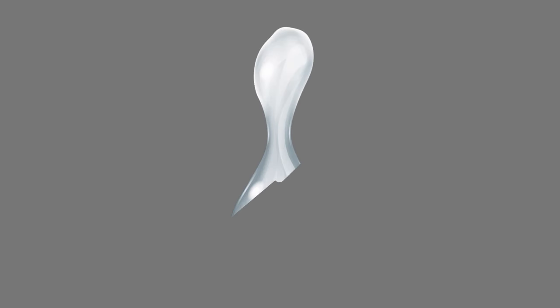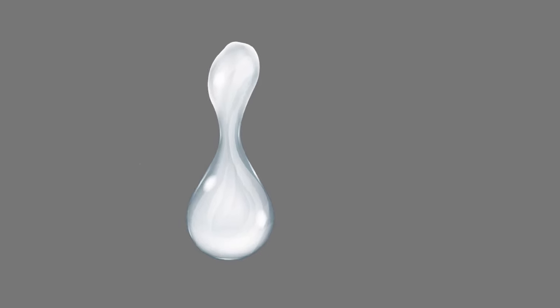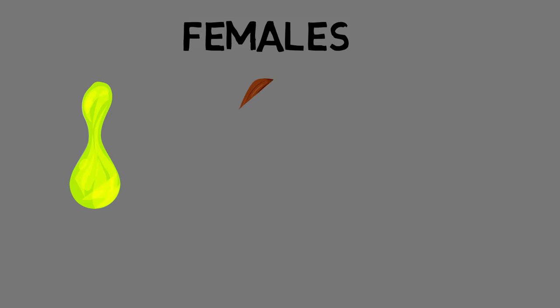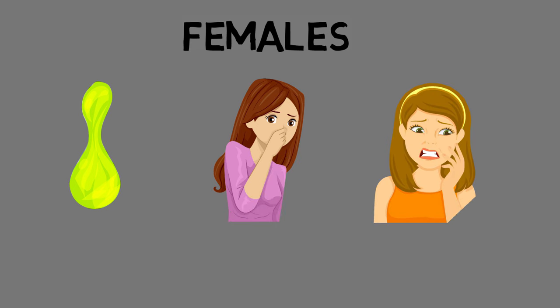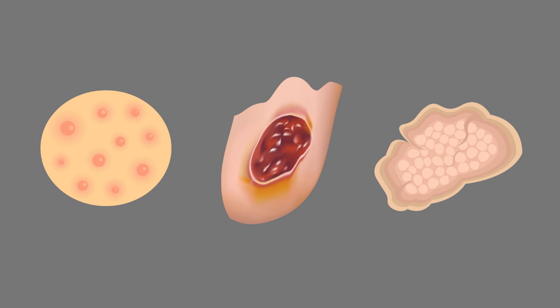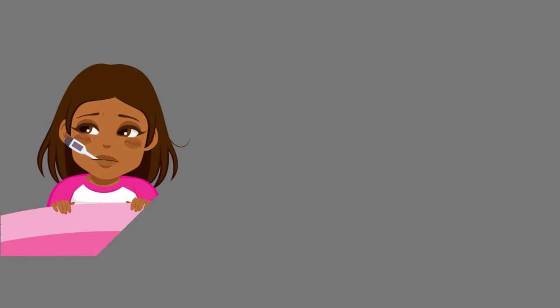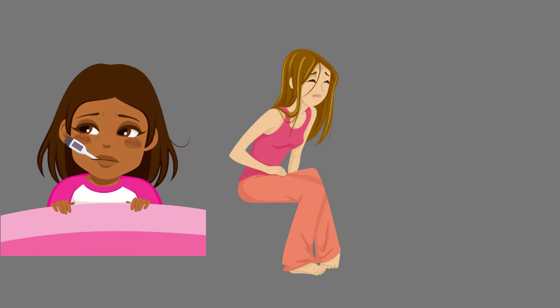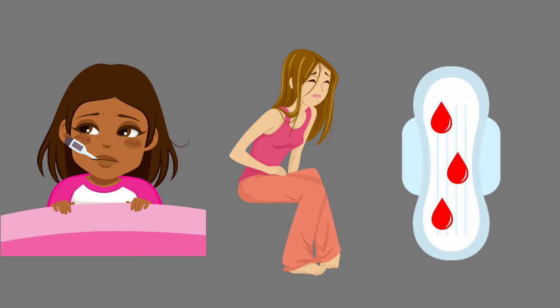If you are sexually active, some signs that you might have an STI include, for females: a change in vaginal discharge. Normally vaginal discharge is clear or slightly cloudy, but if it changes color, smells bad, or burns, it can be a sign that you have an STI. You can also get painful bumps, open sores, or warts on your genitals or anus. Sometimes you can have fever, pain, and vaginal bleeding even when it's not your period.